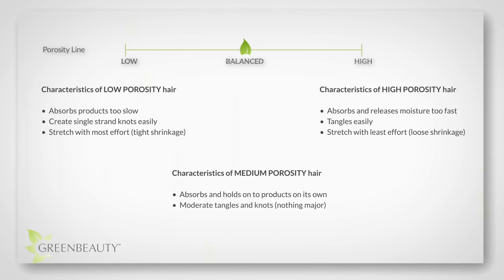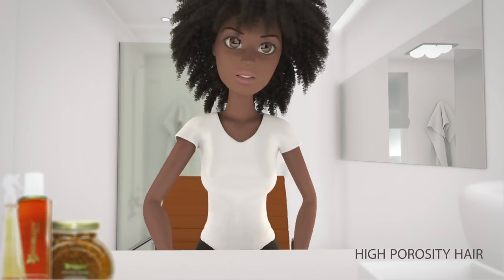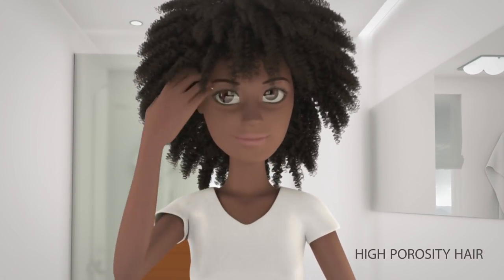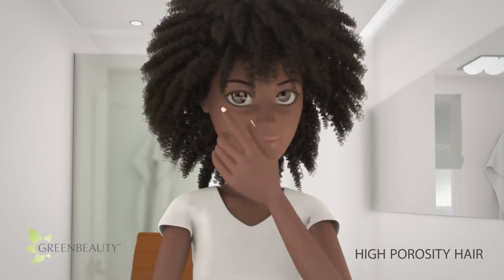Also, where high porosity hair can be stretched with little effort, it takes more work to stretch low porosity hair. Hair that's more balanced in porosity is somewhere in the middle. Its shrinkage is not as tight as low porosity hair, so if it's detangled, it's easier to get a smooth, somewhat stretched twist out without the use of heat. Another easy way to tell if your hair is more balanced in porosity is in the way it holds up styles.